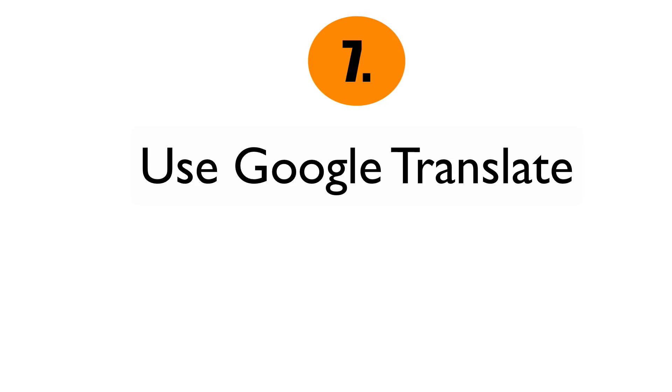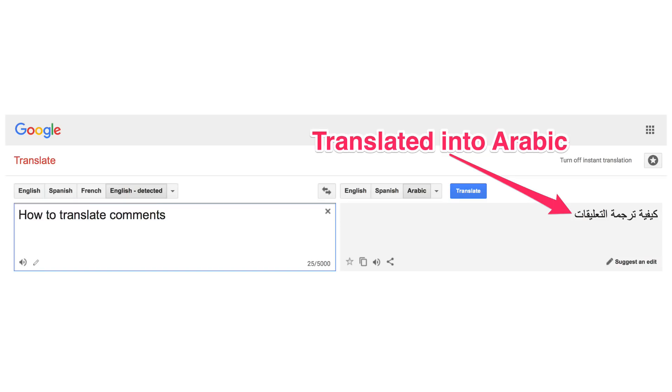Number seven: use Google Translate. Sometimes viewers from other countries don't know how to write English, so they'll leave a comment in their native language. You can translate it by copying and pasting it into Google Translate, then leave a reply in their own language. Your viewer will be amazed that you took the time to translate their comment and reply in their language — it just might earn you a new subscriber.